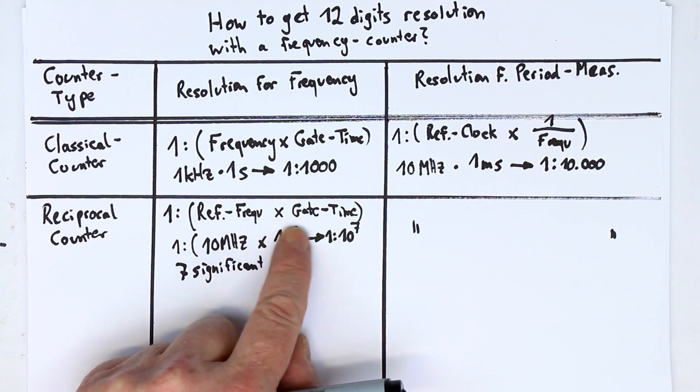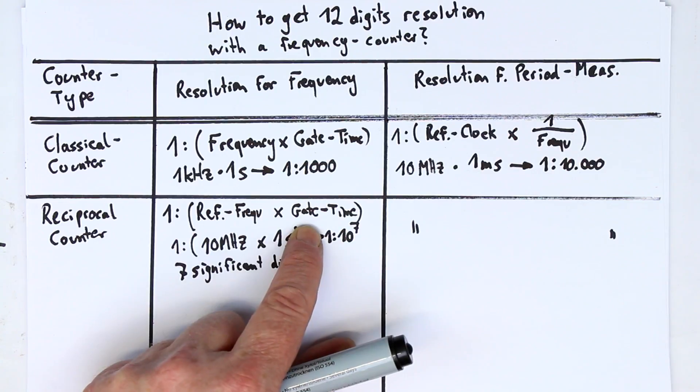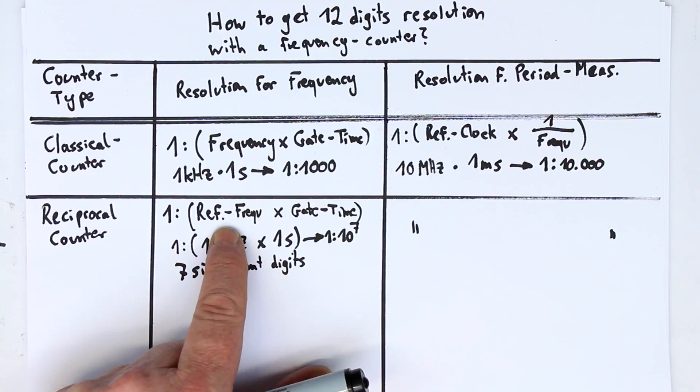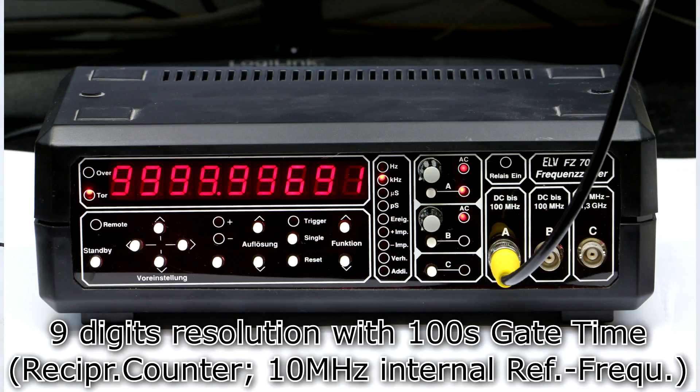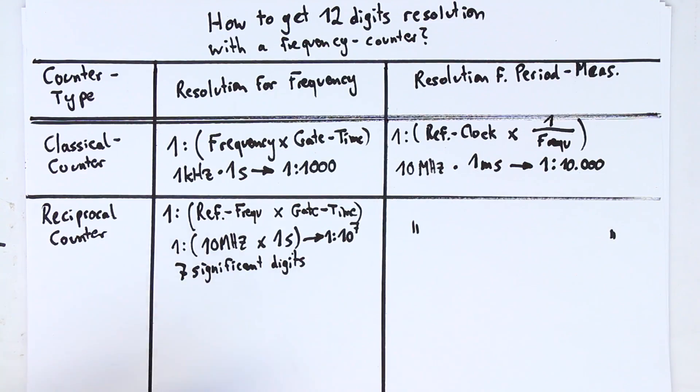So, what can we do to increase our resolution from typically 6 to 7 significant digits to higher values? We have again two variables. We could extend our gate time, but that's not very practical, just for the same reason as in the classical counter. We don't want to wait for an hour until our measurement result appears. So, perhaps the limit in practical application would be 10 seconds. So, what remains is the reference frequency. Could we increase this? Well, usually, no matter if you have a quartz reference or a rubidium reference oscillator, it's most always 10 megahertz. And you could, of course, take a PLL and multiply this frequency. And let's say you go to 500 megahertz by multiplying it with a factor of 50.